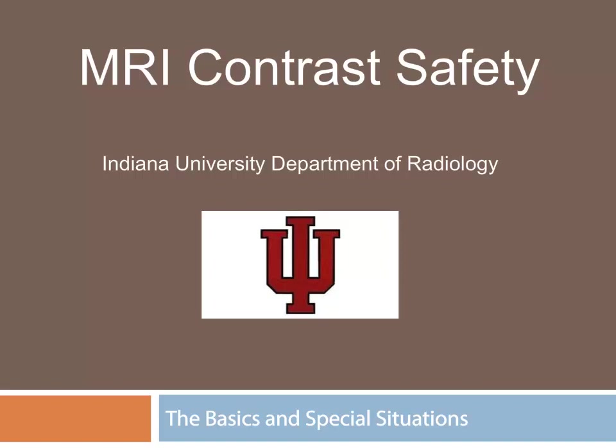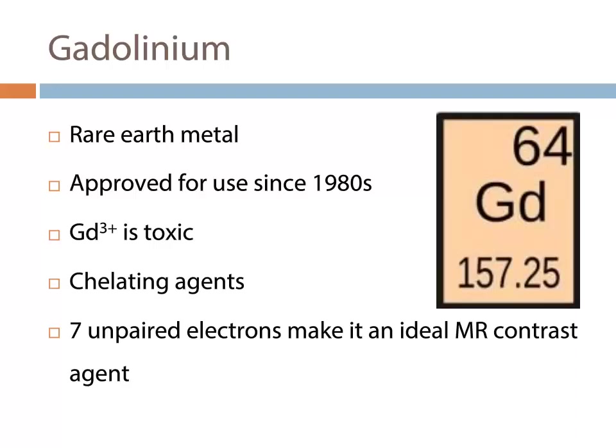The purpose of this presentation is to present material principally found in the ACR manual on contrast safety for core examination purposes. Many different substances and compounds have been used to produce either positive or negative contrast in MR studies, but by far the most common is gadolinium — a rare earth metal which has been approved for use since the 1980s.